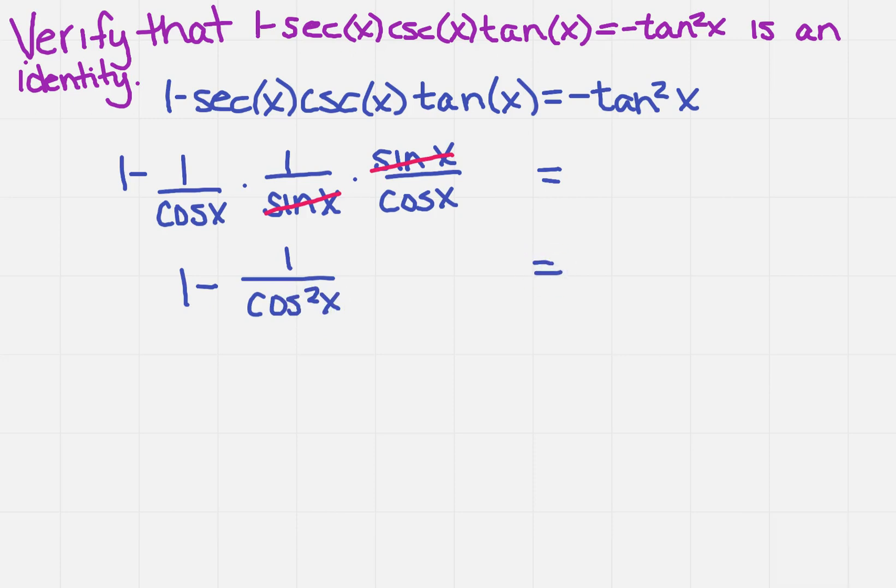Now I've got the 1. Is there anything else that I can simplify? Well, I know that it's 1 minus, and what's another way to write 1 over cos²x? Well, that's going to be sec²x.